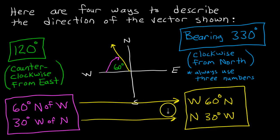We have learned four different ways of describing vector direction, starting with the simple angle measured from the positive x-axis, measured counter-clockwise from east.